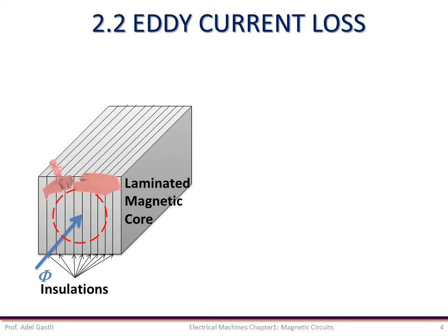It's like cutting the bridge so people cannot move across it anymore. In transformers and other electric machines, the parts that are made of magnetic core and carry time-varying flux are normally laminated.